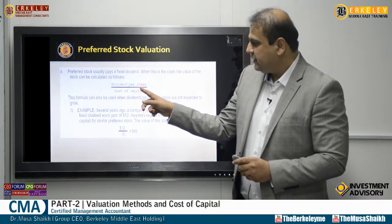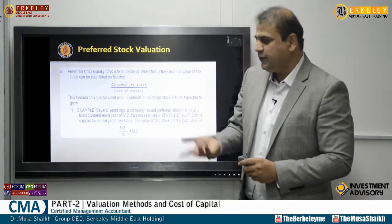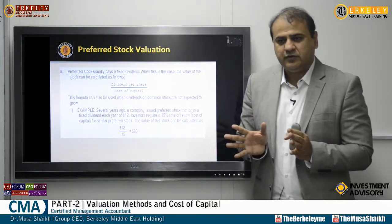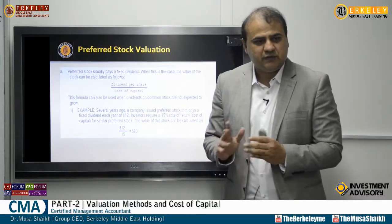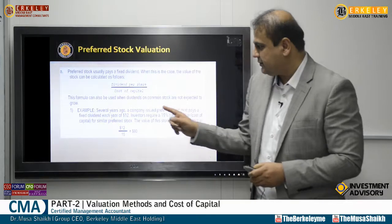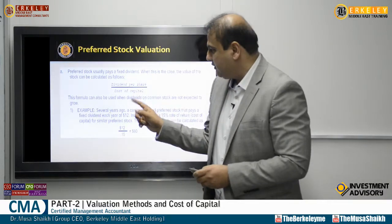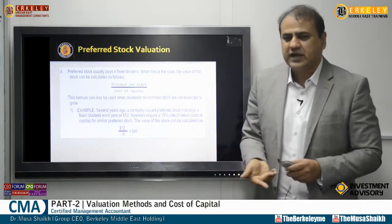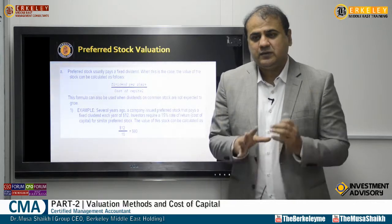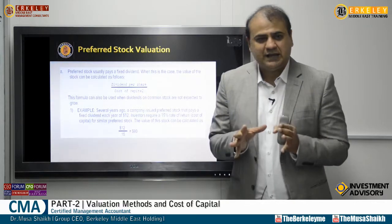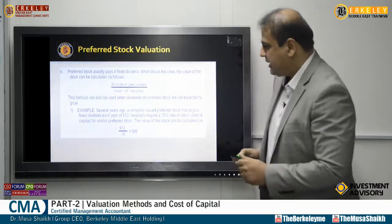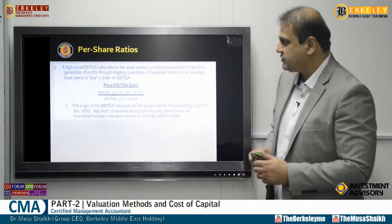We can calculate the preferred stock value using a fixed dividend formula: dividend per share divided by cost of capital. Dividend per share is derived from the number of shares and the total dividend amount. We divide it by the cost of capital, which we are going to discuss shortly.